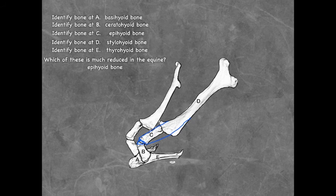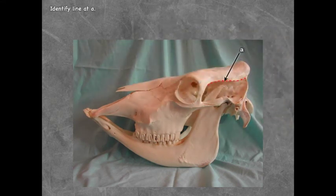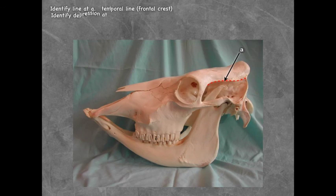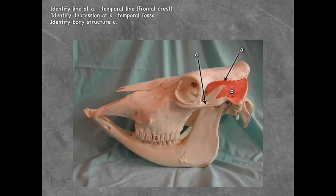The ridge or line at A is the temporal line, sometimes called the frontal crest. Just ventral to that is where you can palpate the corneal artery and nerve — this is where you would block for dehorning. The depression at B is the temporal fossa. Remember the temporal line and temporal fossa are named for the temporalis muscle, not the bone.